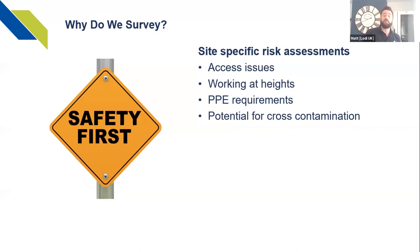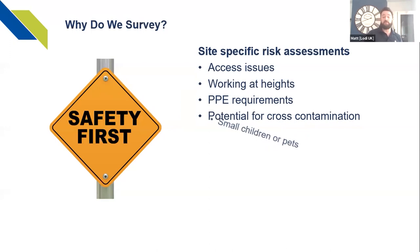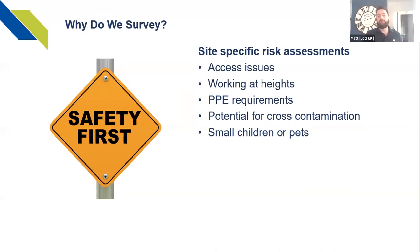Potential for cross-contamination — putting a one-shot into a roof space or using a fog without doing a site-specific risk assessment could mean you haven't established there's an open water tank or even bats. An open water tank could mean you contaminate the property's water source by using a chemical in that area. Small children or pets — if you go and do a spray treatment at Mrs. Smith's house and you haven't established she's got a cat, the cat comes back in after treatment and you haven't allowed for evacuation time afterwards.